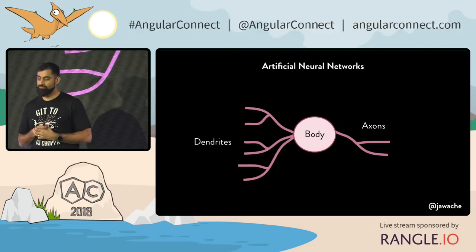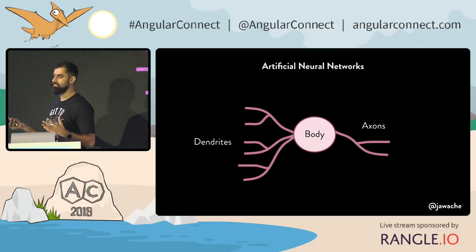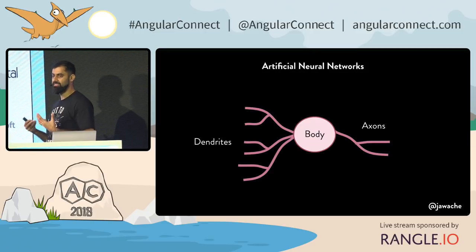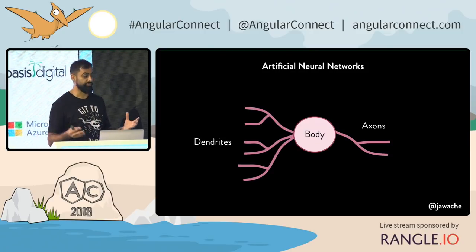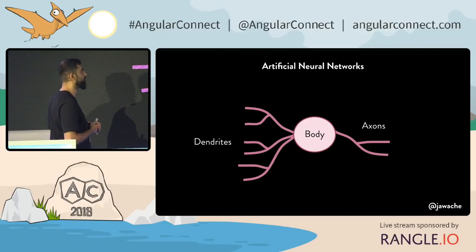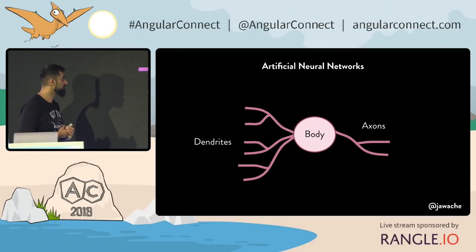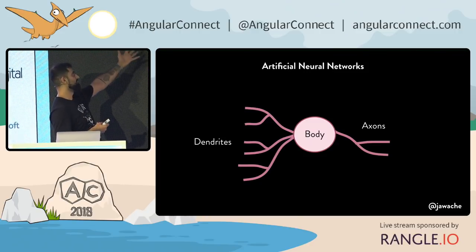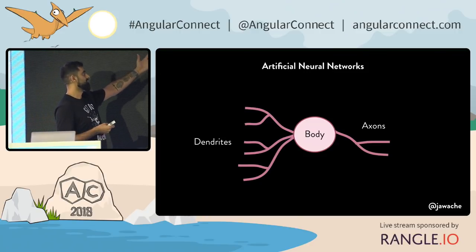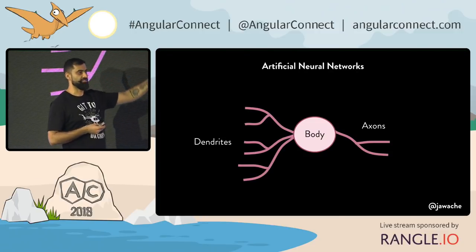What a neuron has: dendrites, a body, and axons. The dendrites are the cables going in. If enough electricity fires in the dendrites, the body fires some electricity out the axons. That's a neuron.